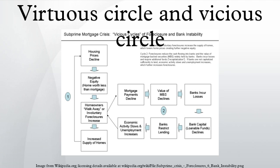Economist Nouriel Roubini described the vicious circles within and across the housing market and financial markets during interviews with Charlie Rose in September and October 2008. Other examples include the poverty cycle, sharecropping, and the intensification of drought.